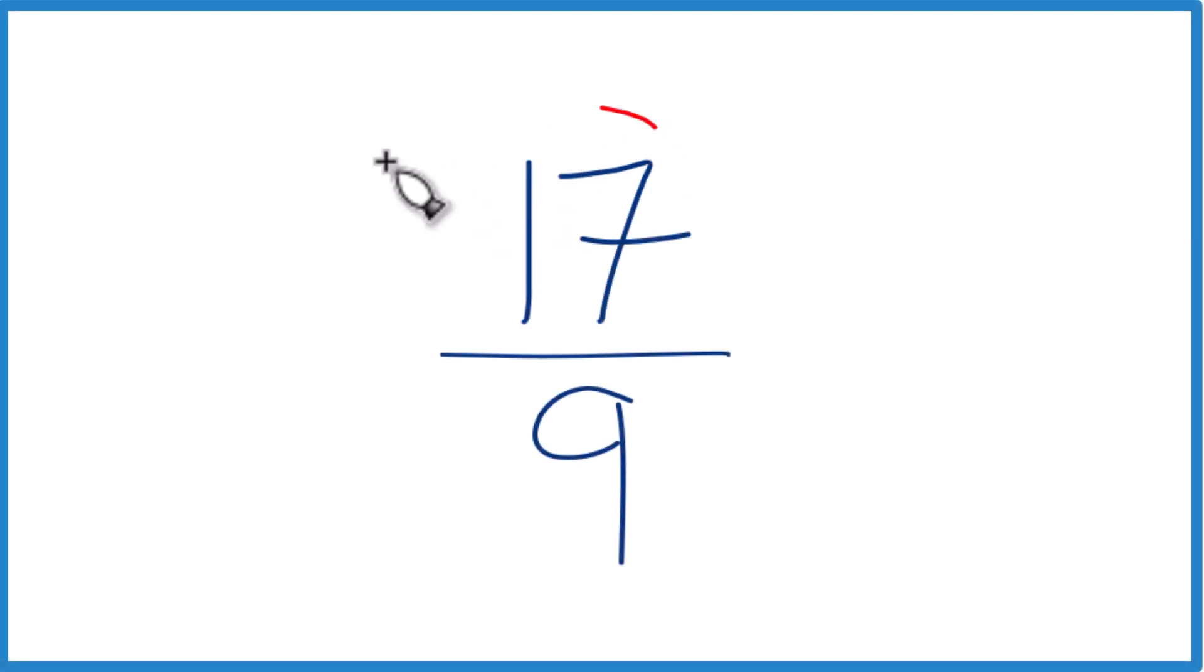If you're asked to write the fraction 17 ninths as a mixed number, here's how you do it. Right now it's an improper fraction. That's because the numerator here is larger than the denominator. We want to get it to a mixed number.